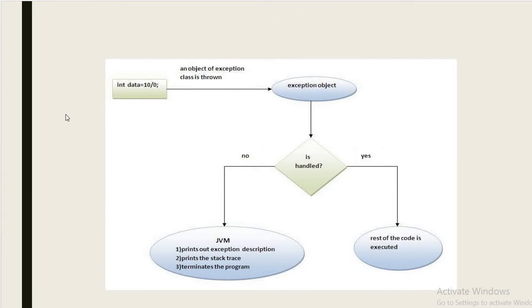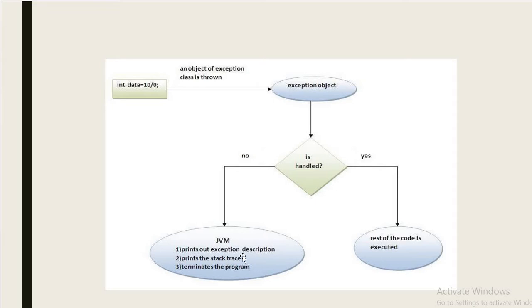Here is a flowchart diagram for handling exceptions. For example, if inside our code we declare int a = 10 / 0, we know it will raise an ArithmeticException and throw an exception object. If we handle it using a catch block, the rest of the code will execute. If we are not using a try-catch block and not handling the exception, it will be thrown to the JVM.